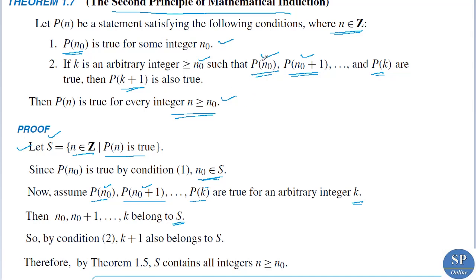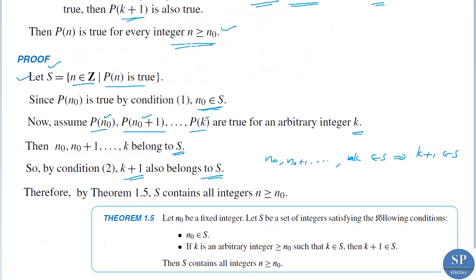By condition 2, since P(n₀), P(n₀+1), ..., P(k) are all true, P(k+1) is also true for that arbitrary k. Therefore n₀, n₀+1, ..., k, k+1 all belong to S. Therefore, by theorem 1.5, S contains all integers n greater than or equal to n₀.